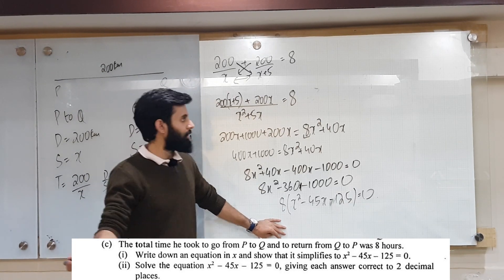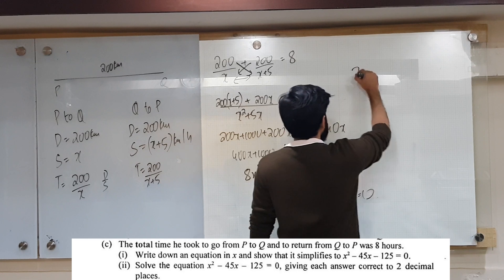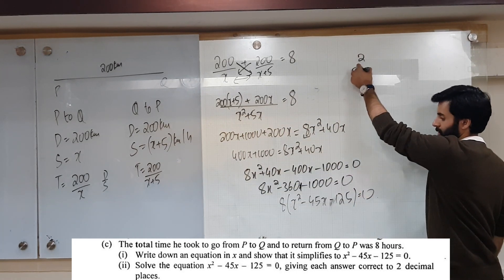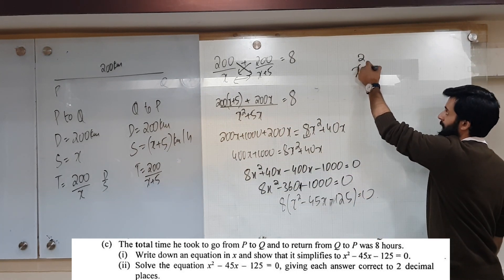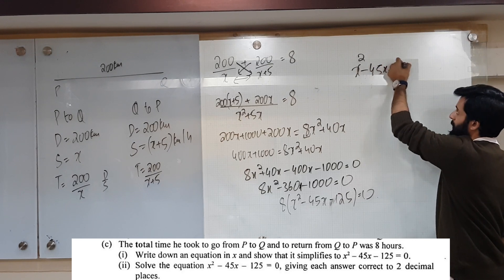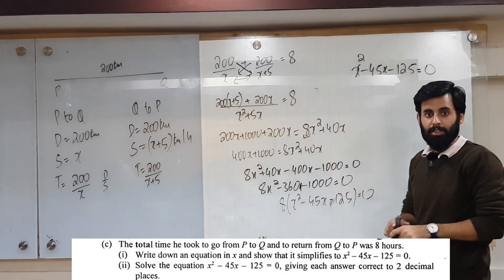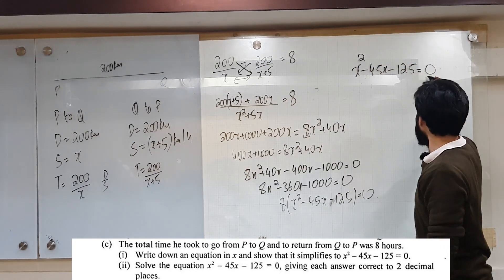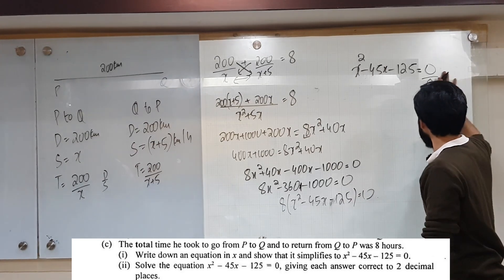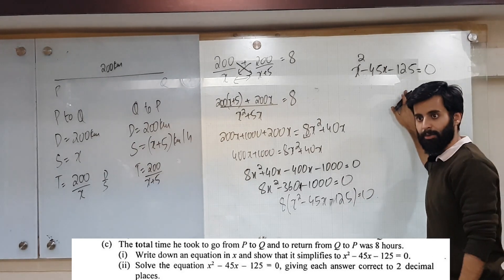The 8 will be divided and disappear. So you are left with x squared minus 45x minus 125 equals 0. What's 0 divided by 8? It's 0.